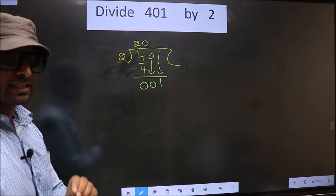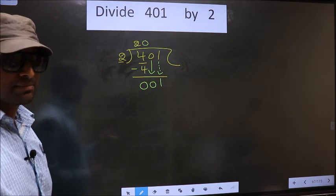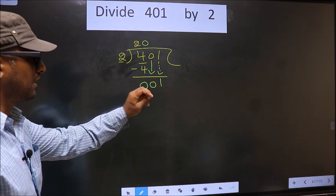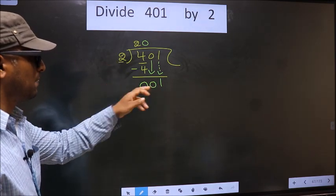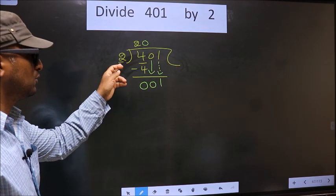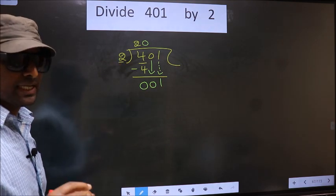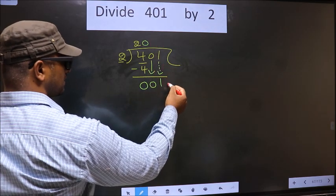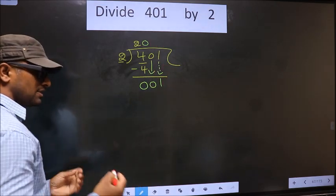Now this is where the mistake happens. And the mistake is this. Here we have 1. Here 2. 1 is smaller than 2. So what many do is they put a dot and take 0 here, which is wrong.